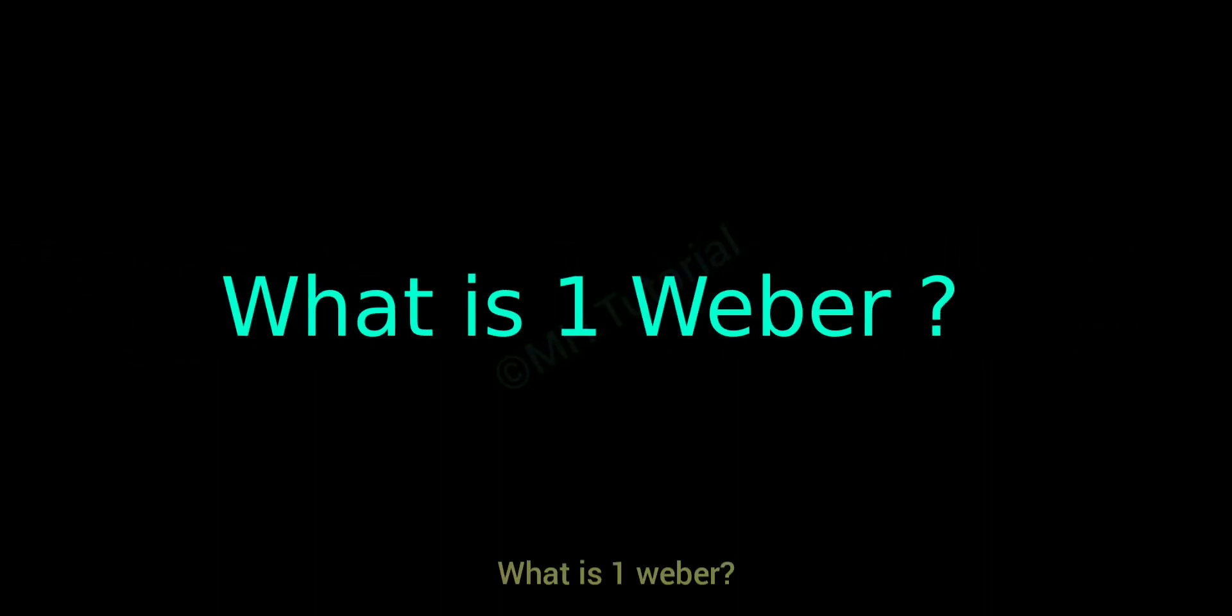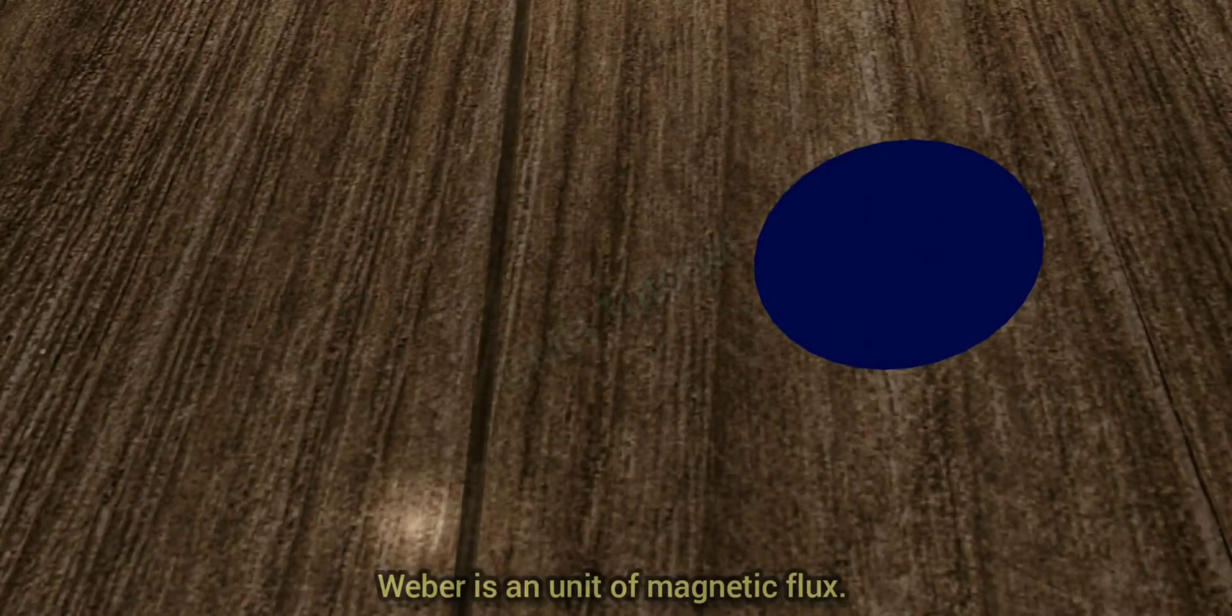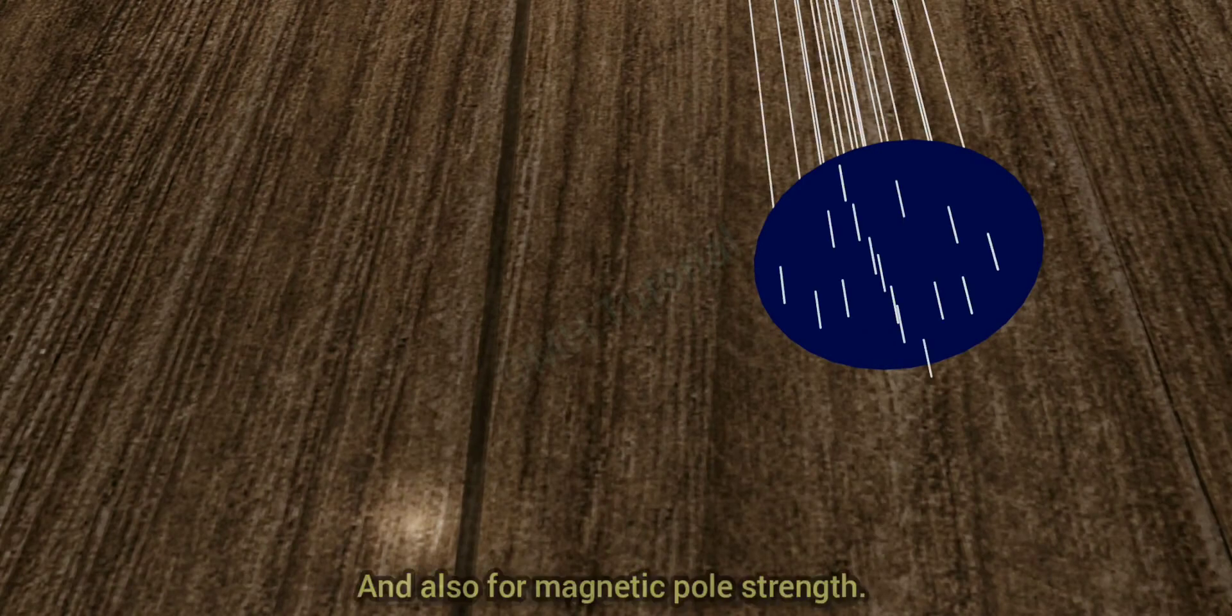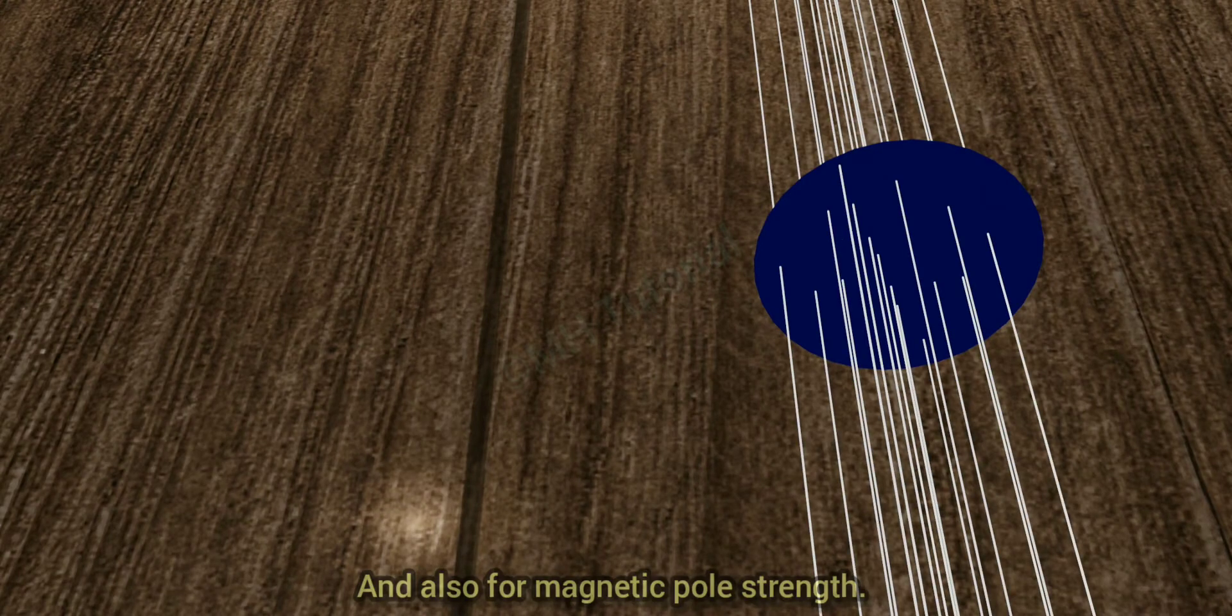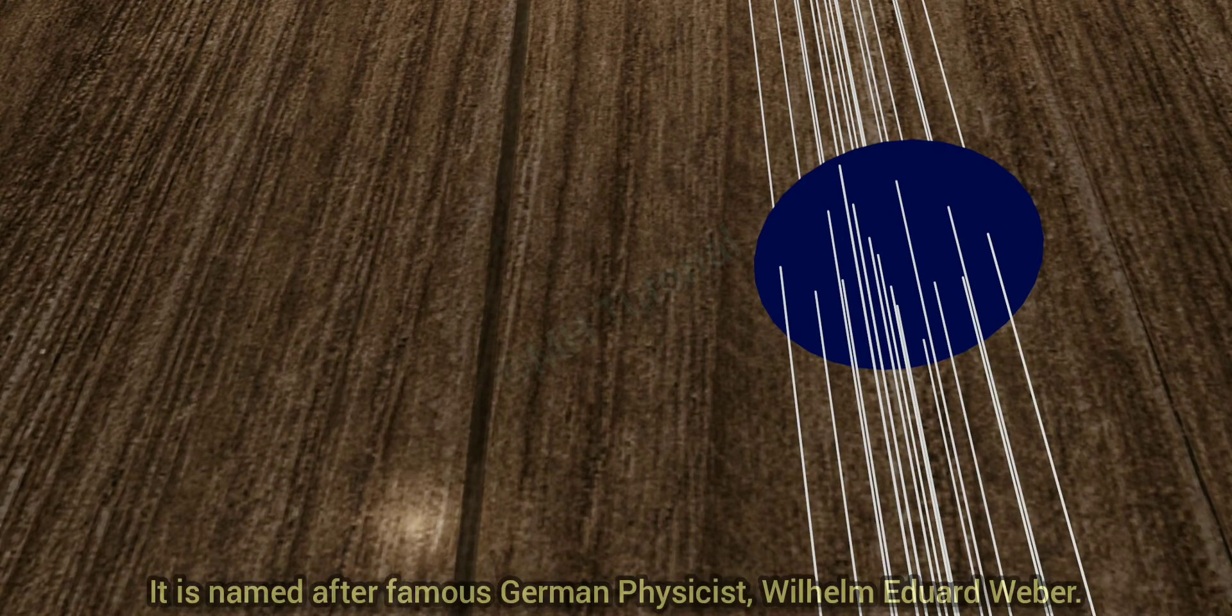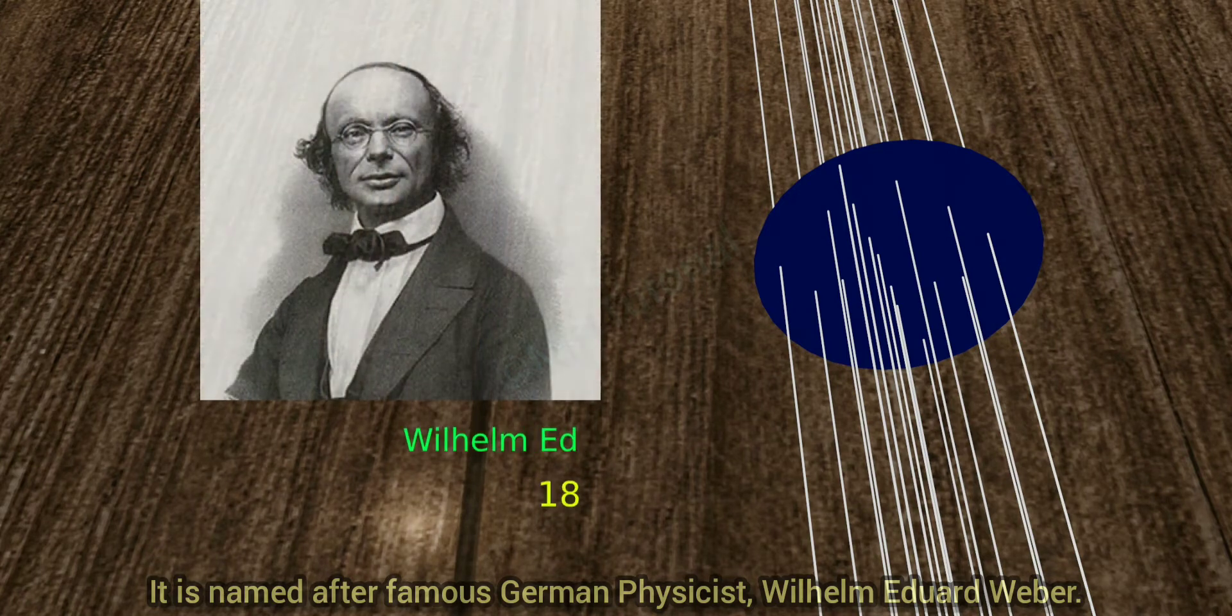What is one Weber? Weber is a unit of magnetic flux and also for magnetic pole strength. It is named after famous German physicist Wilhelm Eduard Weber.